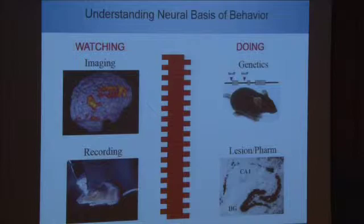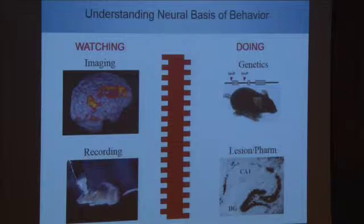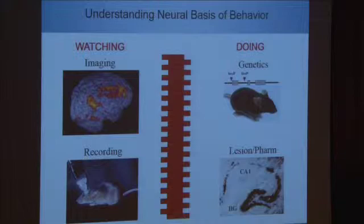That's one half of the way people try to figure out how the brain is processing information. The other half is doing something to the brain. As you're probably aware, there are a lot of different kinds of lesions to the brain — if you've ever read The Man Who Mistook His Wife for a Hat. We know a lot about how the brain is functionally parceled from human patients and animal models where parts of the brain are damaged. You can find lesions where you wouldn't be able to recognize glasses but might be able to recognize faces or animate objects.